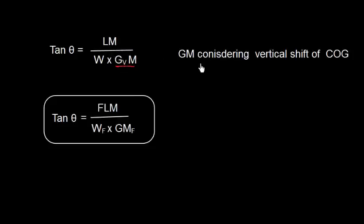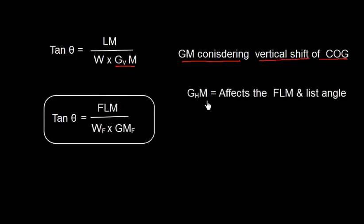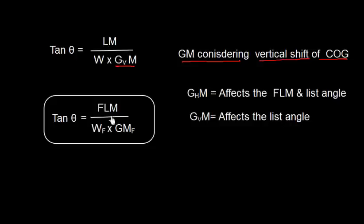For GVM, we consider the GM with the vertical shift of center of gravity. GHM (horizontal) will affect the final list moment and the list angle, and the vertical shift will also affect the list angle. So tan theta equals Final List Moment divided by WF multiplied by GMF, where WF is the final displacement and GMF is the final GM.